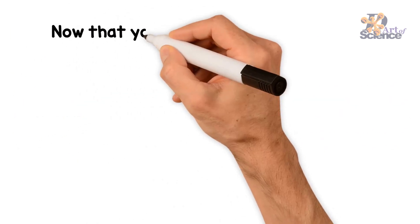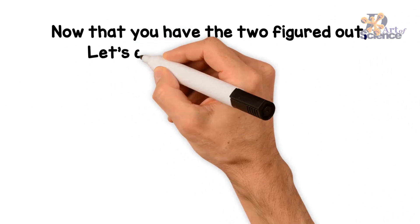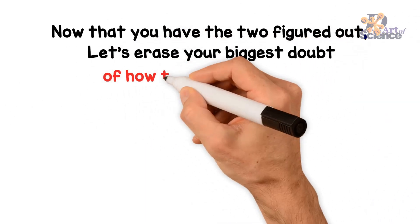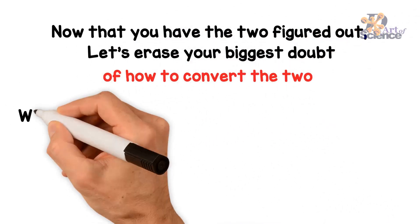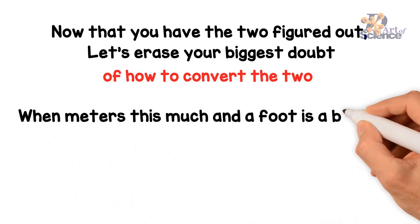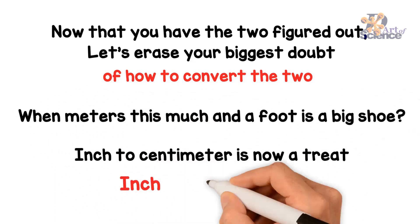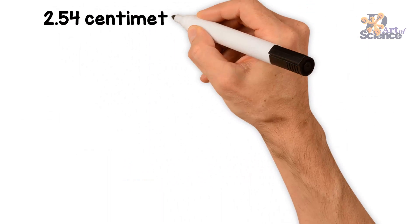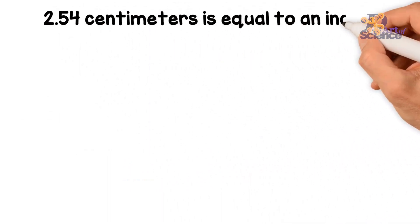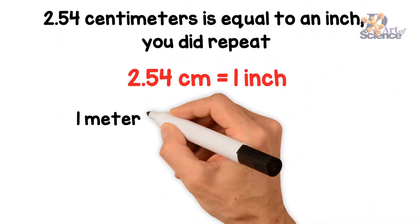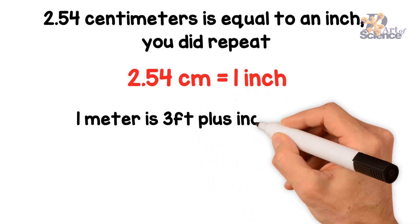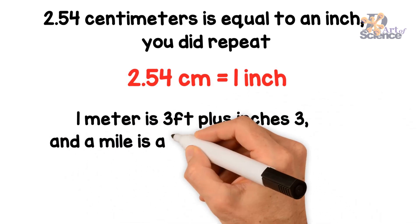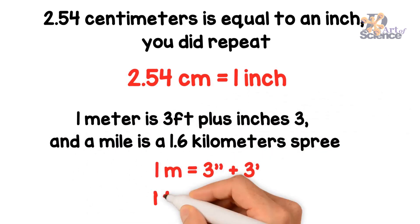Now that you have the two figured out, let's erase the biggest doubt. The power to convert the two. When the meters there's so much and the foot is a big shoe. Inch to centimeters now, 2.54 centimeters is equal to an inch. One meter is three feet plus inches three. And a mile is a 1.6 kilometer spree.